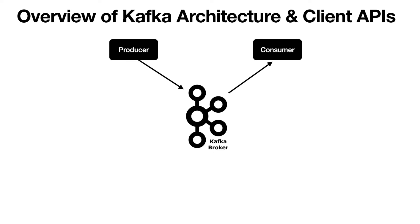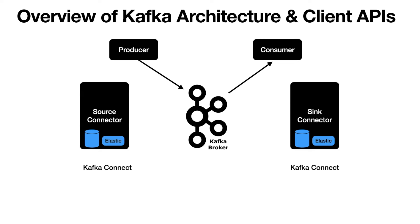Let me start with the Connect API. The Connect API is further divided into two types: the source connector and the sink connector. The source connector is responsible for reading the data from an external data source and publishing the data as events into the Kafka topic. The sink connector is responsible for extracting the data from a Kafka topic and writing it to an external data source.